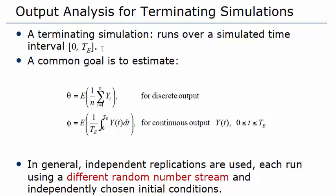Let the number of observations occur during time TE. A common goal in simulation is to estimate theta, where theta equals E[1/n · Σ(i=1 to n) Yi] for discrete output. When output data are of the form Y(t) from 0 to TE, the goal is to find phi, where phi = E[1/TE · ∫(0 to TE) Y(t) dt]. This formula applies for continuous outputs.